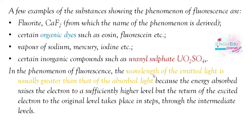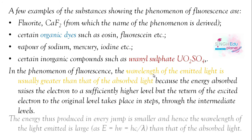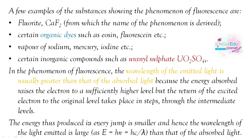In every jump, the energy produced is smaller. Hence, the wavelength of emitted light is large. Energy (E) is inversely proportional to wavelength (λ) according to the formula, so when energy is smaller, the wavelength is larger.